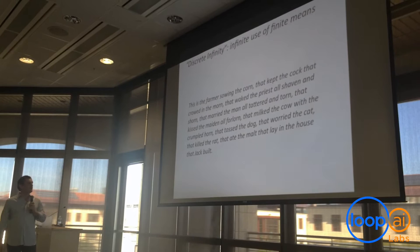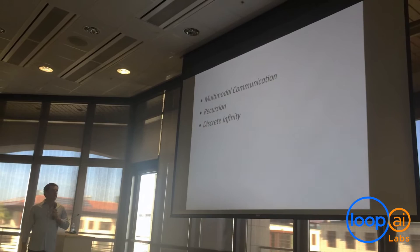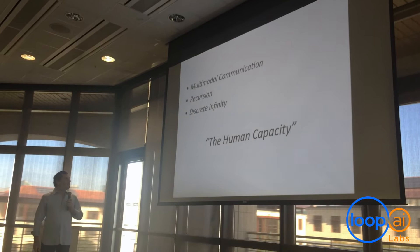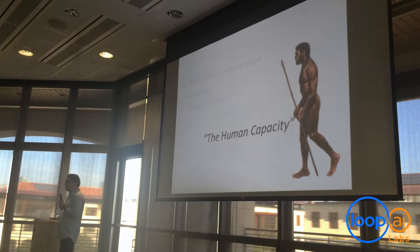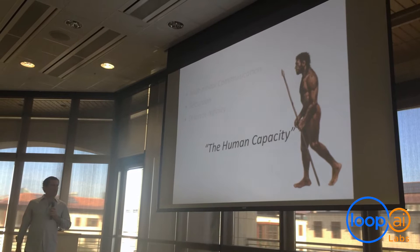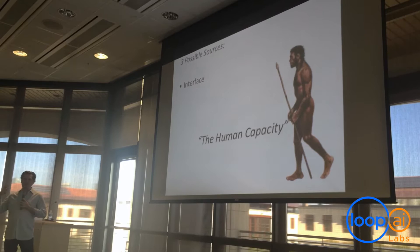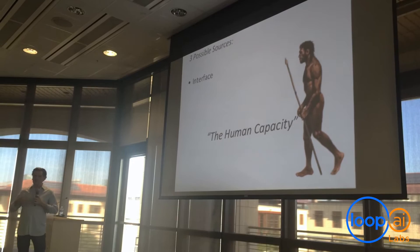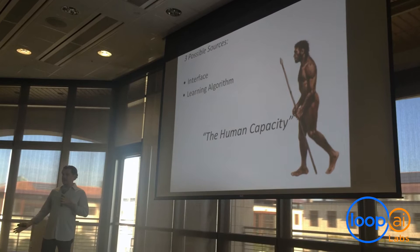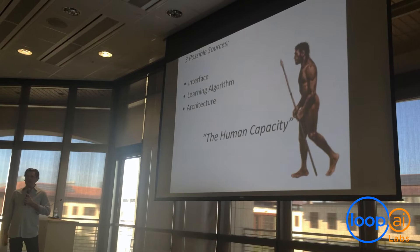So these three things — multimodal communication, recursion, and discrete infinity — seem to define what's sometimes called the human capacity for language, and that capacity is unique to humans. It seems to have only showed up on the evolutionary scale about 50,000 to 100,000 years ago, which is not very long ago. So there are three possibilities for what changed: one is some kind of change in the interface, maybe we're able to pay attention to sounds and vocalizations better; another is a different learning algorithm, that evolution developed a different way for us to learn things; and the third possibility is architecture — that maybe our brains were wired in a special way.